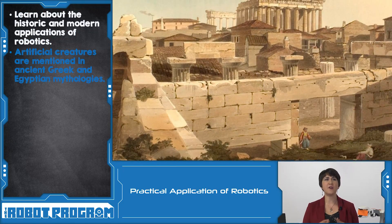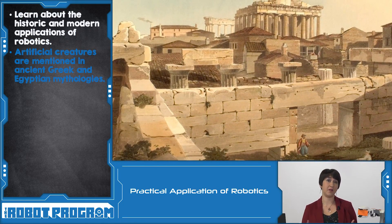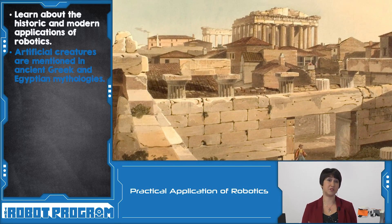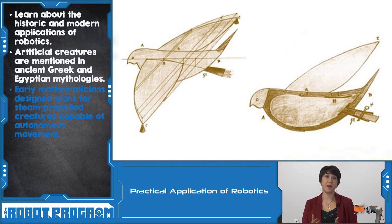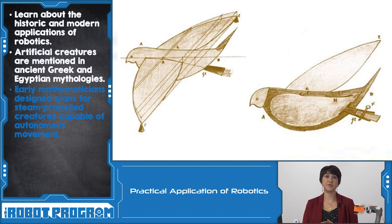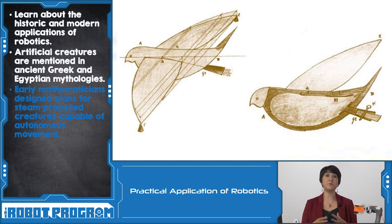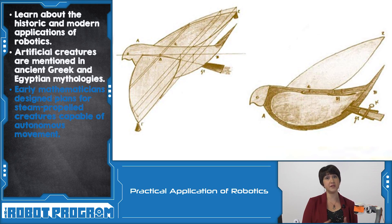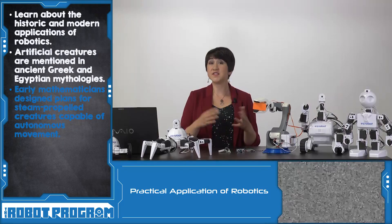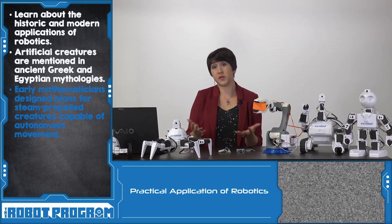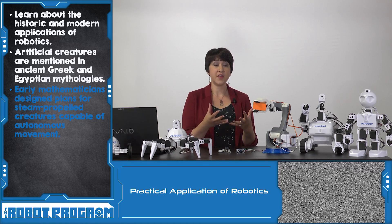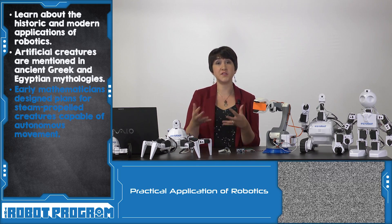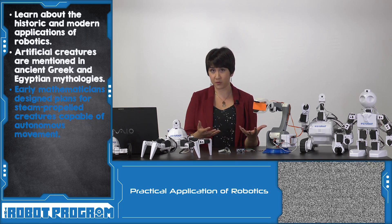The idea of artificial or mechanical people has been around since ancient Greece and ancient Egyptian mythology. One ancient Greek mathematician had plans for a steam-propelled mechanical bird that could fly on its own. This is an example of early robotics: a creature mimicking something in real life that can move on its own without any organic components.